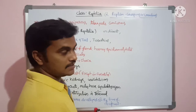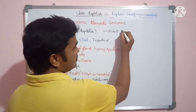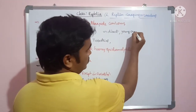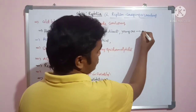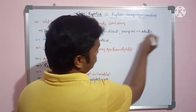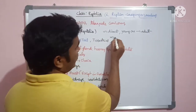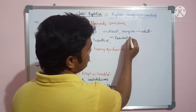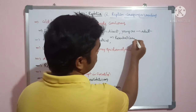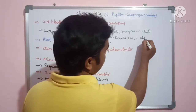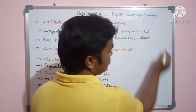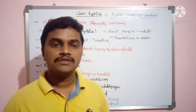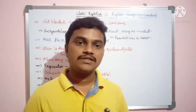Development is direct — there is no larval stage. The young one resembles the adult. There is no parental care in reptilia; parental care is absent.